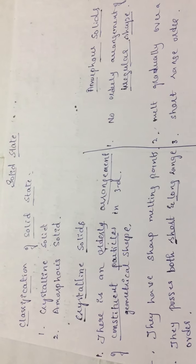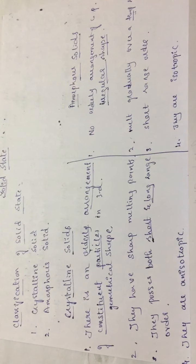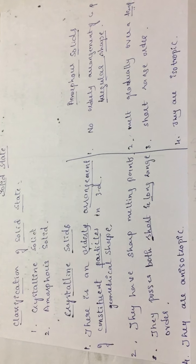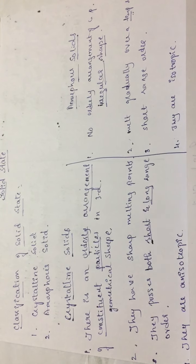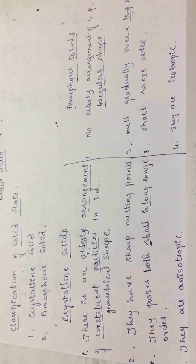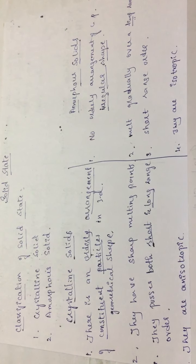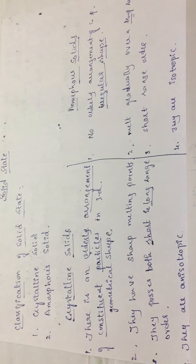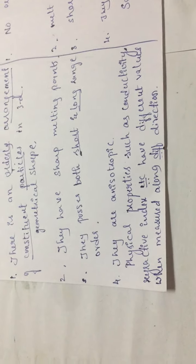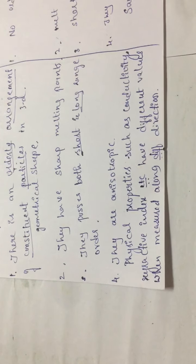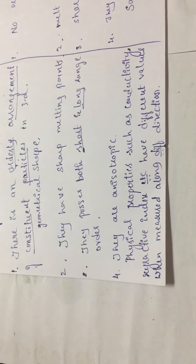The next difference: crystalline solids are anisotropic in nature, whereas amorphous solids are isotropic in nature. Anisotropic means the physical properties — such as conductivity, refractive index, etc. — have different values when measured along different directions.